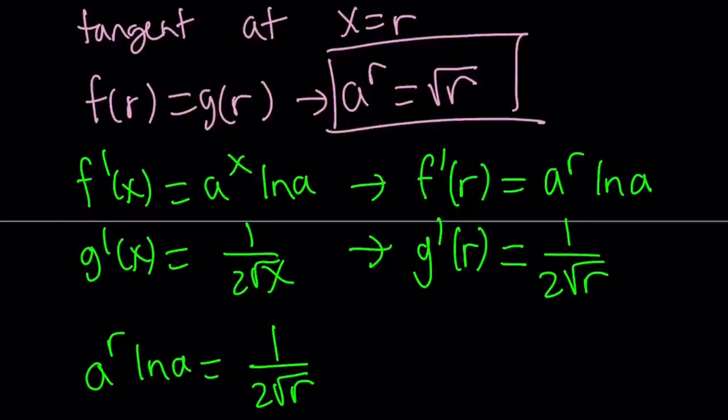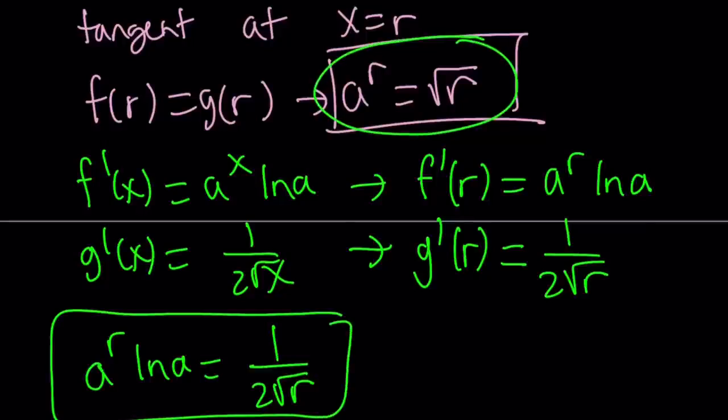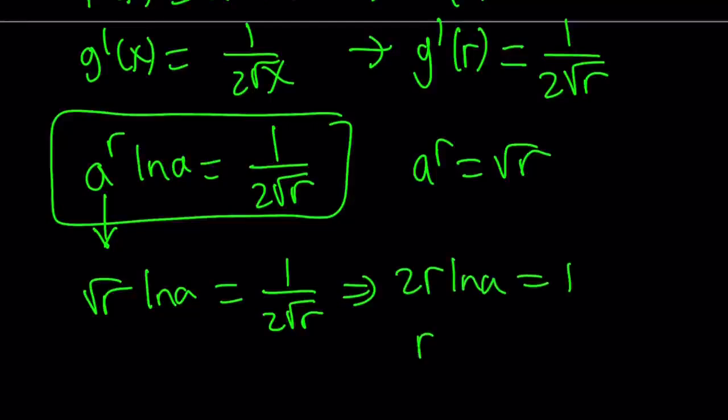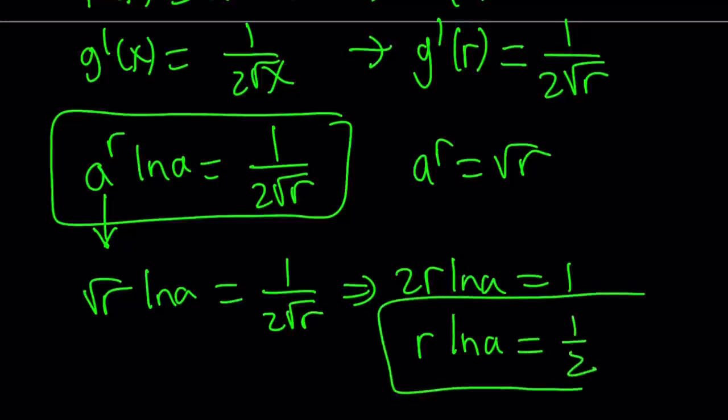So here's what I'm going to do. I do have this equation. 1 over 2 root r equals a to the power r ln a. And I also have this equation right here. a to the power r is the same as square root of r. So I can go ahead and replace this a to the r with square root of r. Let's do it. Square root of r ln a equals 1 over 2 times the square root of r. And then cross multiply. You get 2r ln a equals 1. And r ln a equals 1 half.